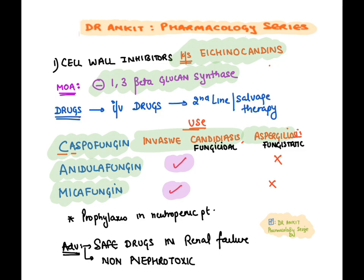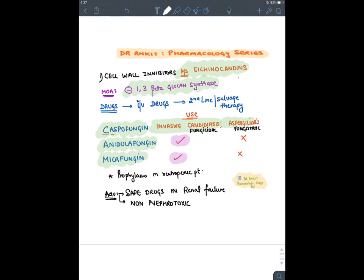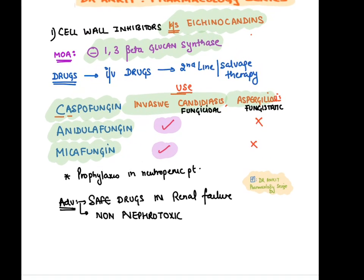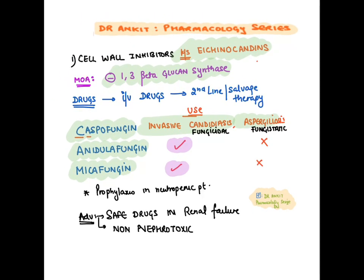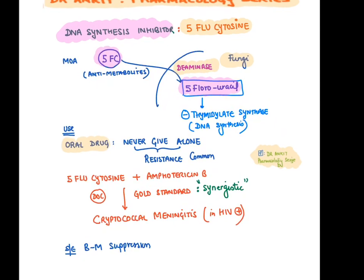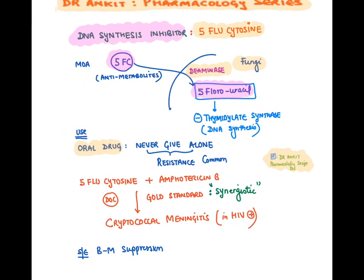Echinocandins are non-nephrotoxic and renal-safe, unlike amphotericin B which is nephrotoxic. The DNA synthesis inhibitor 5-flucytosine has an active form of 5-fluorouracil, which inhibits thymidylate synthase, preventing conversion of uracil into thymidine.